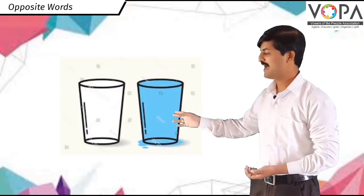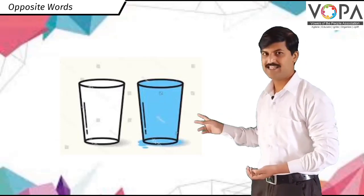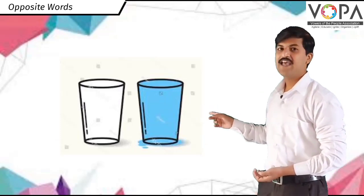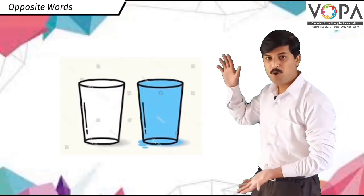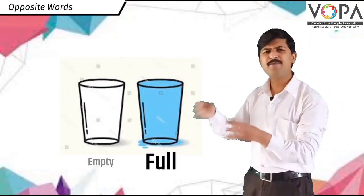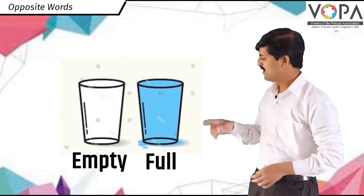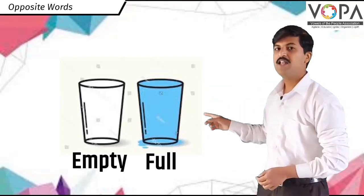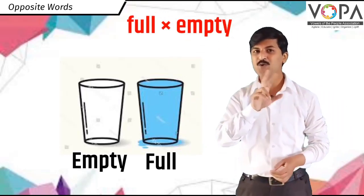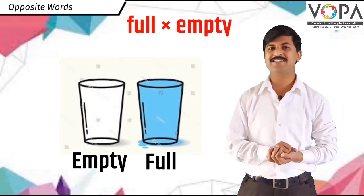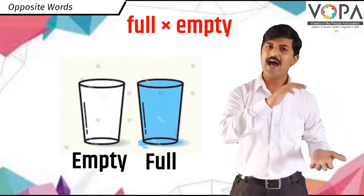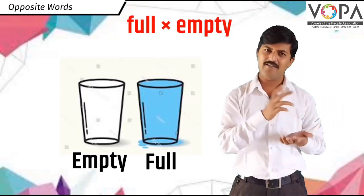See this picture. There are two glasses. One glass is full of water and another glass is empty. Full and empty are two opposite words. In Marathi: bharlela ani dikama — he duni ulat artha che shabda ahet.